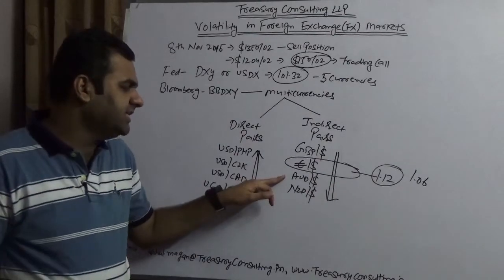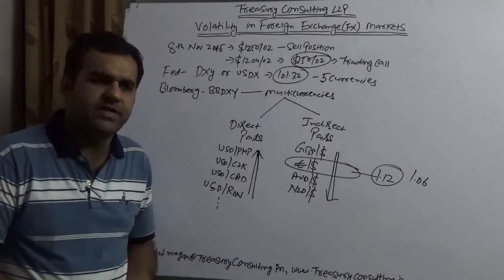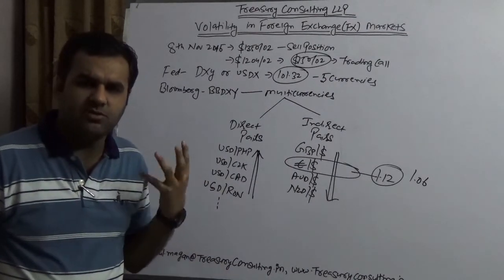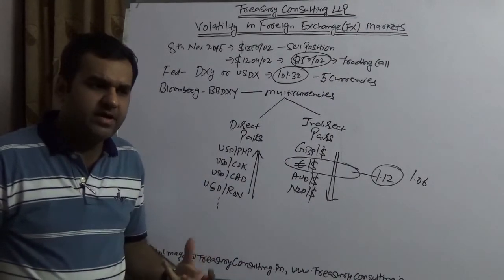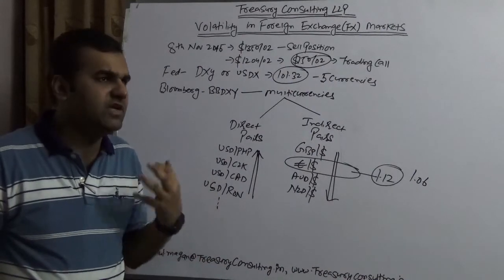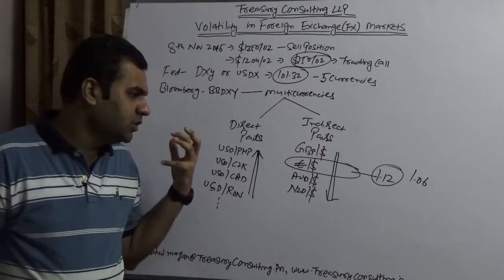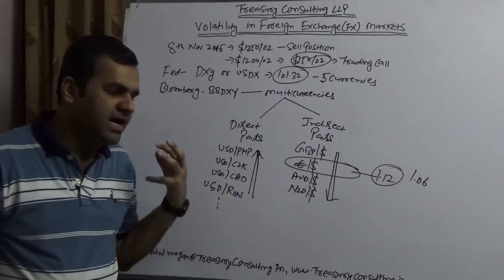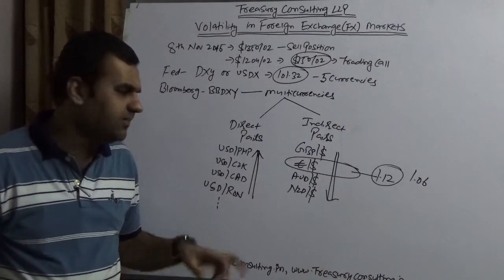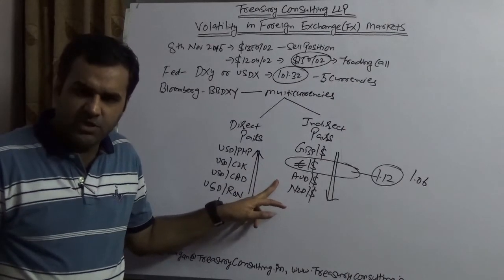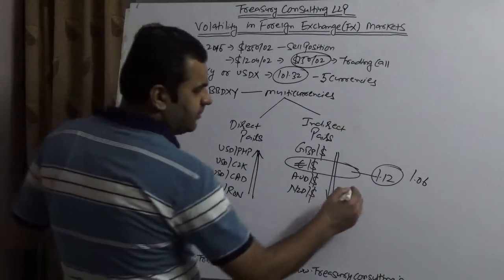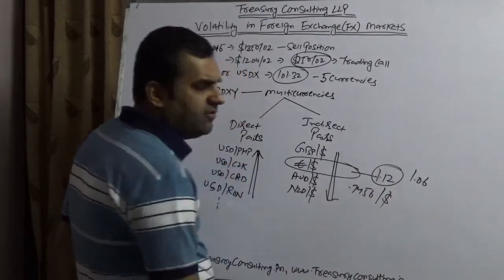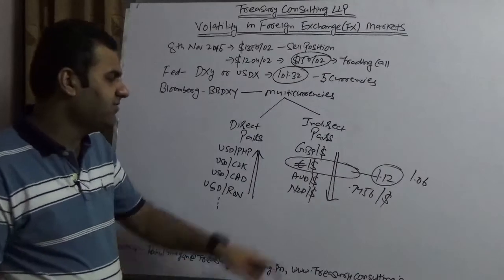Australian dollar is facing a very minor hedge of course because commodities are picking up. Donald Trump being a real estate player, he already has his own real estate empire and real estate would pick up. If real estate picks up, commodities will pick up. If commodities pick up, iron ore and other commodities pick up, Aussie dollar would be volatile. Today Aussie dollar is trading at roughly 0.7456 per dollar.